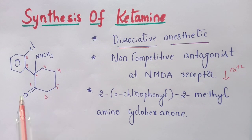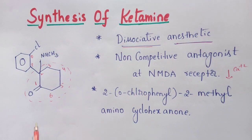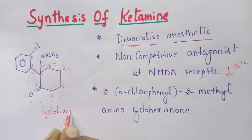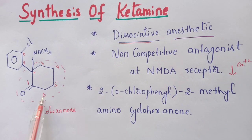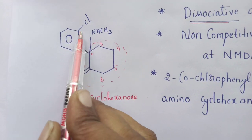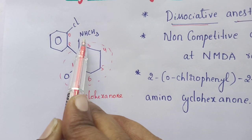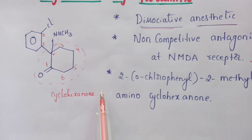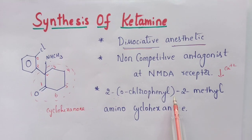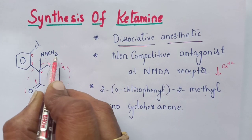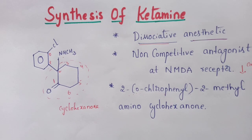This is the structure of ketamine. Its parent nucleus is cyclohexanone. For the ketone, start numbering: one, two, three, four, five, and six. At the second position it consists of a chlorophenyl group as well as a methylamino group. The IUPAC name is 2-(2-chlorophenyl)-2-(methylamino)cyclohexanone.